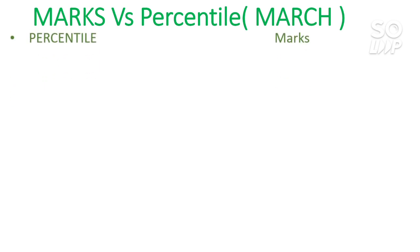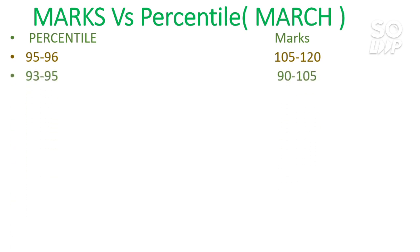These are the expected marks versus percentile for the March session, so don't be confused. For 95 to 96 percentile, you need 105 to 120 marks — this is the safest score for EWS or OBC students targeting core branches in the top 10 or top 15 NITs. I will make more videos with category-wise cutoffs for each branch at every NIT.